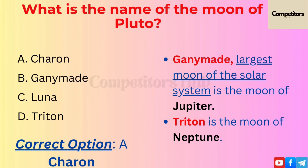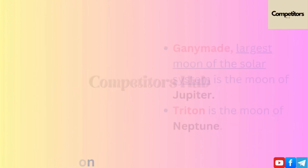Ganymede, the largest moon of the solar system, is the moon of Jupiter. Triton is the moon of Neptune.